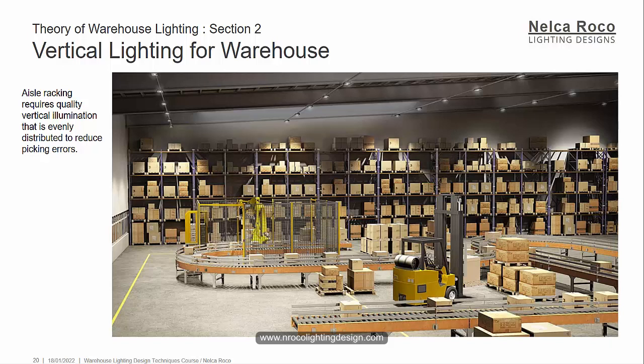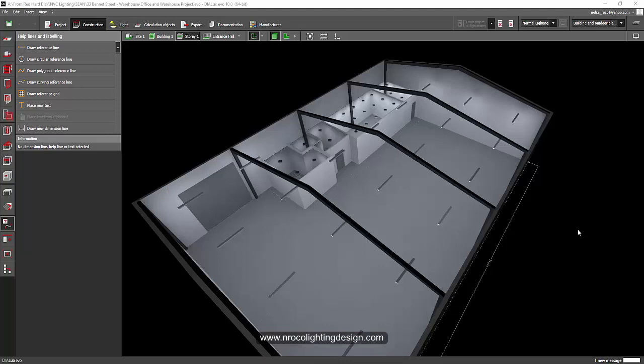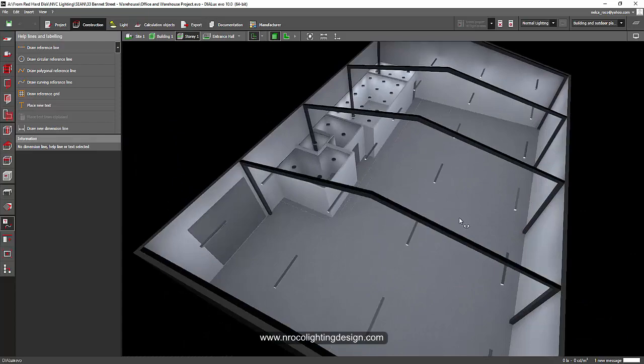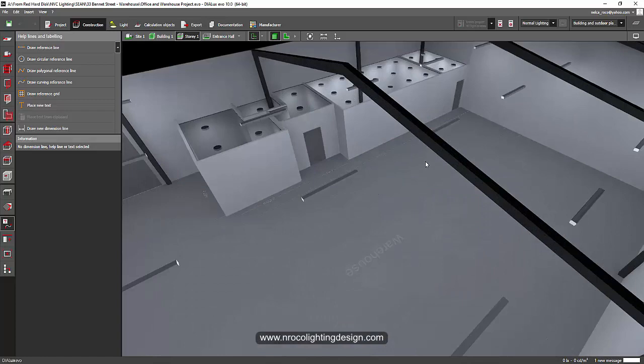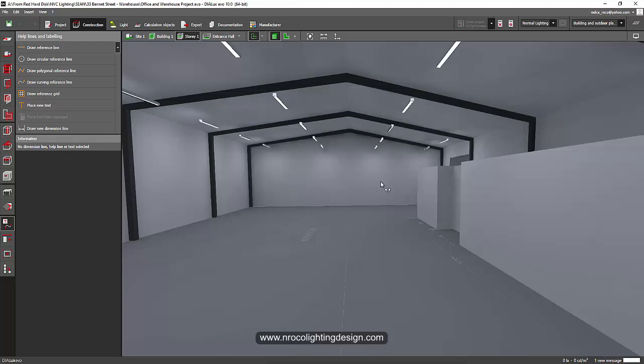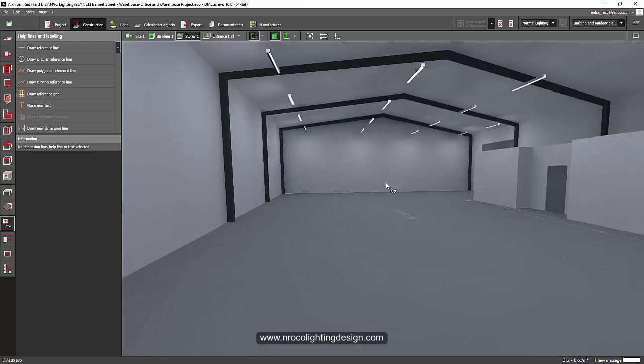Let me show you some of my projects why it is so important to show you the vertical illumination. I have two projects here opened right now. For a warehouse that is very small and doesn't have racks, there is no problem about the vertical because there is nothing to be highlighted, there is no shelvings to look up. So this one is okay, no problem with this one.